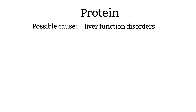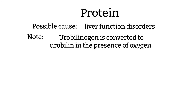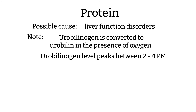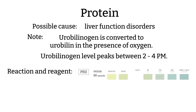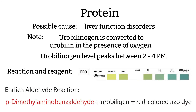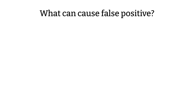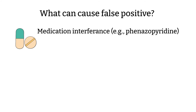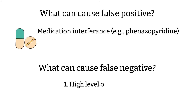Urobilinogen. Screening for urobilinogen is useful for liver function disorders. One of the issues in measuring urobilinogen is its instability — urobilinogen is converted to urobilin on standing in the presence of oxygen and on exposure to air. One unique thing about urobilinogen level is that it peaks between 2 to 4 PM. Urobilinogen results can be read at 60 seconds. Here are the reactions and reagents for this test. Some medications can cause false positive test results, and a high level of nitrite and the presence of formalin can give a false negative result.